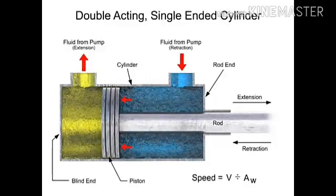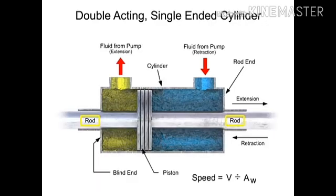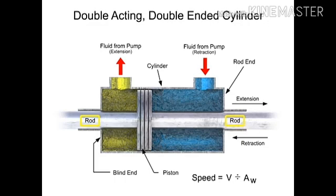All the cylinders shown to this point have been single-ended. They have only one working rod. On special cylinders, two rods may be used. These are called double-ended cylinders. They have two rods, both attached to the piston, and each coming through an end cap.